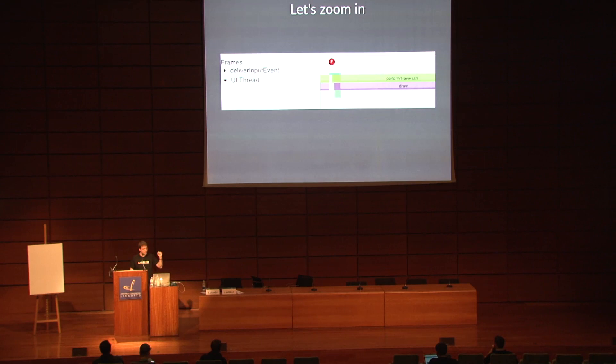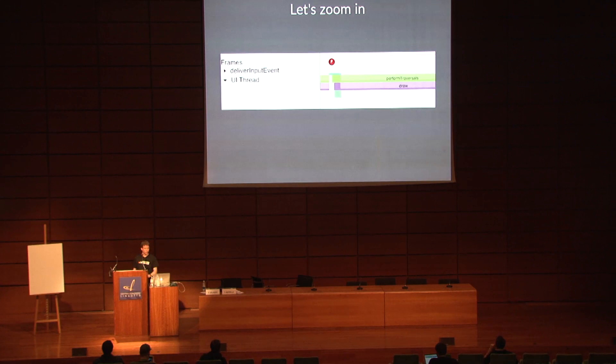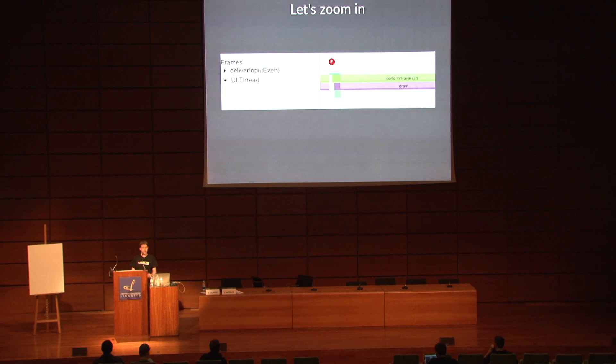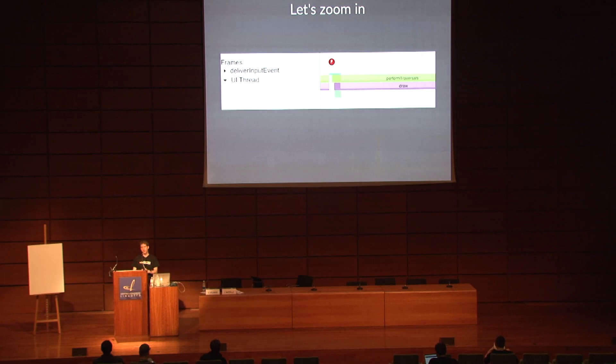If we zoom in, we can see a missed frame. For this particular frame, we are simply performing a traversal on draw — layouting and draw operations that are just too long — and it made us miss a frame. If you miss a frame, you are not going to hit 17 or 18 milliseconds. The system will wait for the next frame, so it's going to be 32 or even more milliseconds before you can display anything else. That's why a long draw or layouting operation tends to accumulate and makes the whole experience very unsatisfactory.